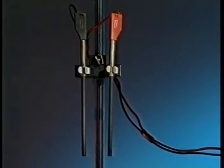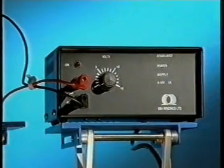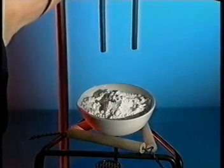A circuit is set up using two carbon electrodes, an ammeter and a power supply. The white powder is lead bromide.